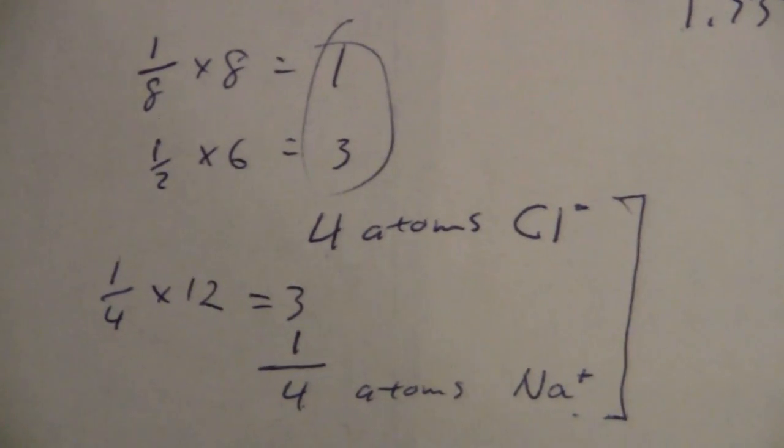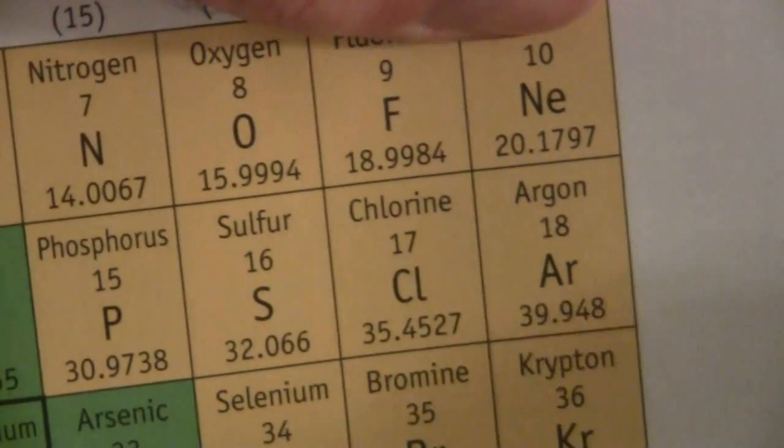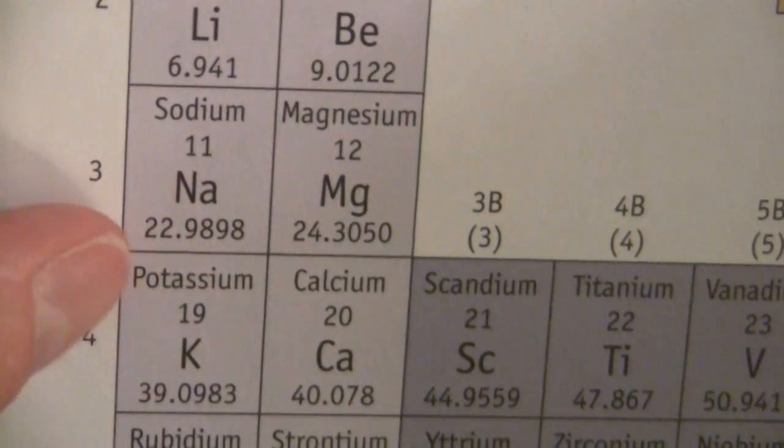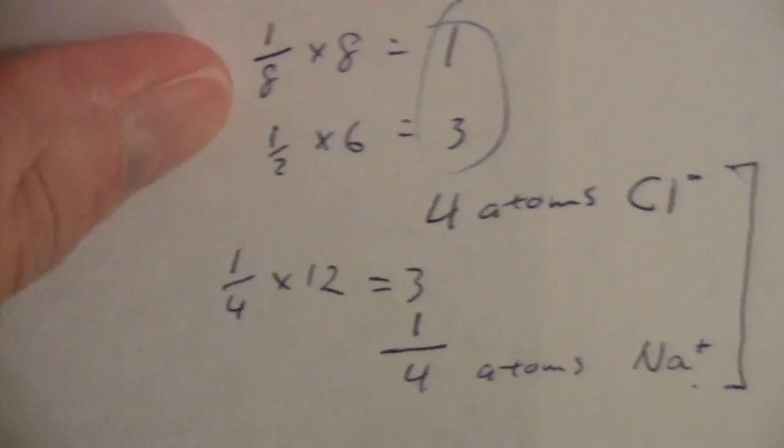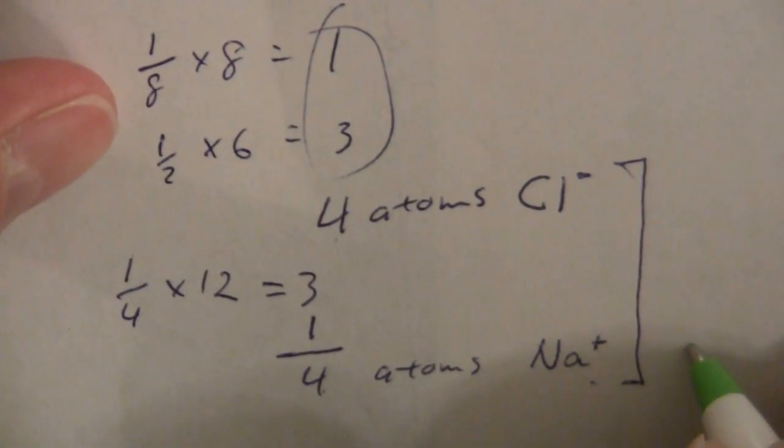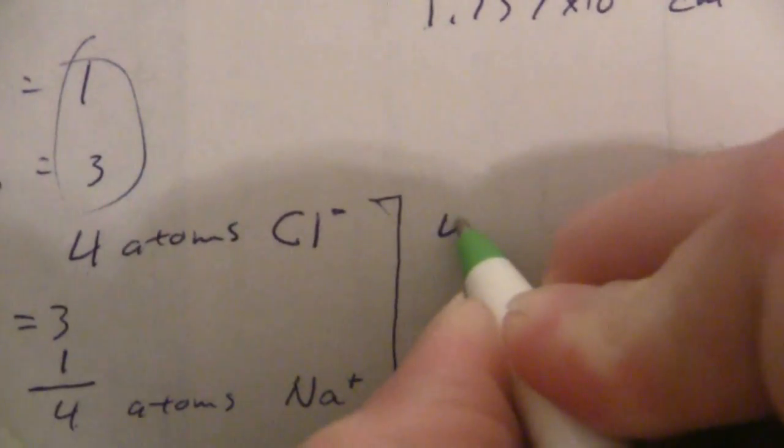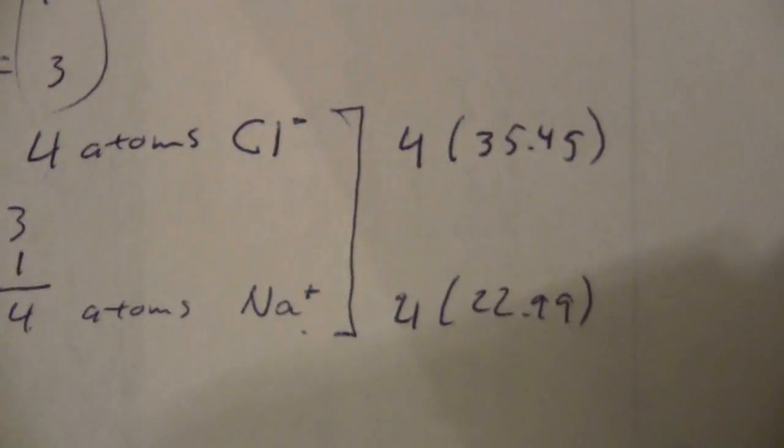So, we get that information from the periodic table, and you can see here that chlorine has a mass of 35.45, and we can use grams per mole there, and sodium has a mass of 22.99. So, 22.99 grams per mole for sodium, and we have four of those, 22.99, and we have four of the chloride at 35.45.